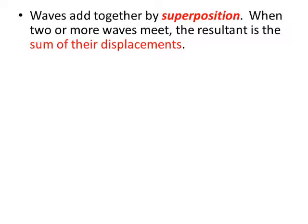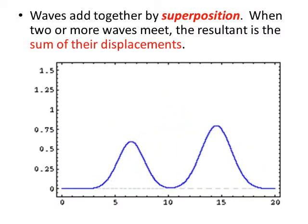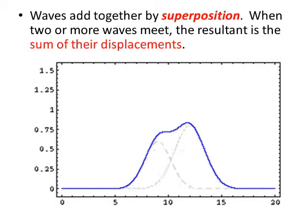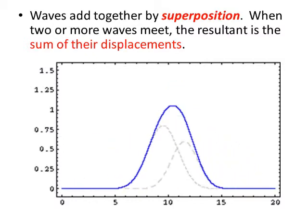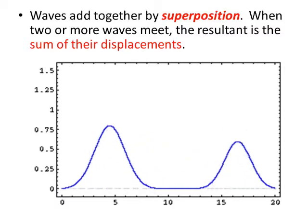Two waves add together by superposition and the resultant wave is the sum of their displacement. So here we see two waves traveling towards each other and because they both got positive values, when they meet or superpose, you add the displacements together and you get a resultant wave, which is bigger.